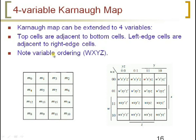With 4 variables, you will get 16 combinations or 16 min terms. We follow the Gray code sequence: M0, M1, M2, M3, 4, 5, 6, 7, 8, 9, 10, 11, 12, 13, 14, 15. All those min terms are represented with variables on the right-hand side.